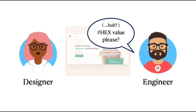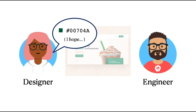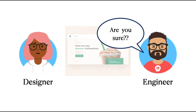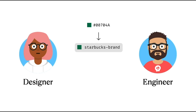The engineer doesn't really understand and asks: can I get the hex value, please? The designer says: I think it was this hex value — the last I knew was this hex number, if anyone hasn't updated, I hope. And the engineer gets frustrated and says: okay, are you sure? I'm not really confident about this. I'm going to have a lot of work to do. So you see, there is a problem here.